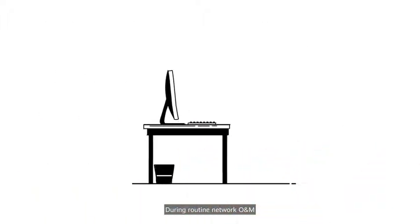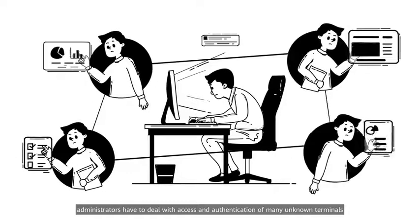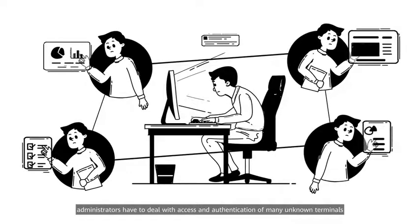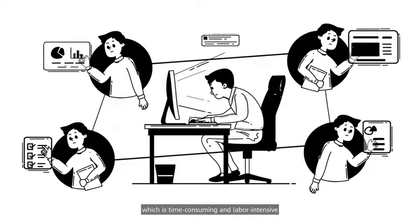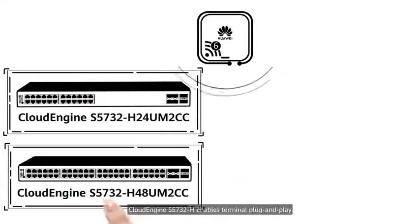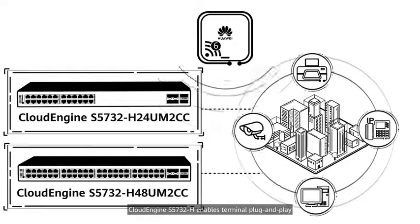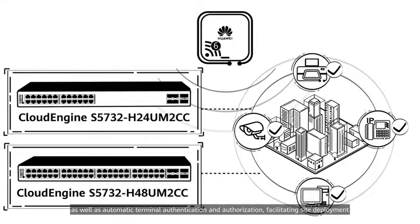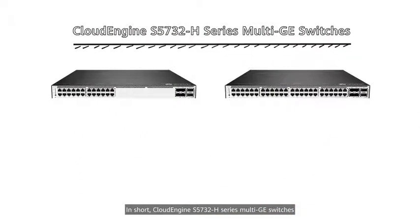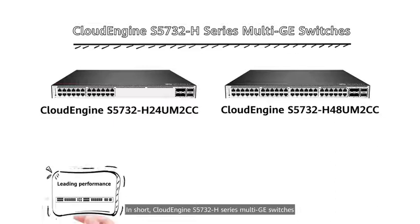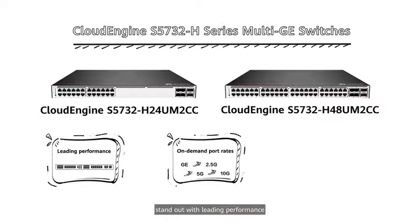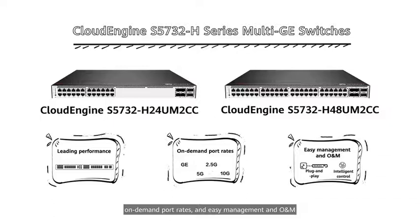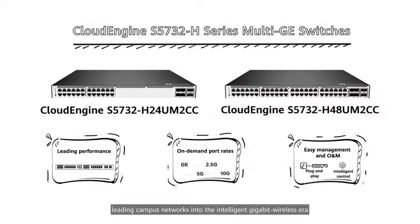During routine network O&M, administrators have to deal with access and authentication of many unknown terminals, which is time-consuming and labor-intensive. Cloud Engine S5732H enables terminal plug-and-play, as well as automatic terminal authentication and authorization, facilitating site deployment. In short, Cloud Engine S5732H series multi-GE switches stand out with leading performance, on-demand port rates, and easy management in O&M, leading campus networks into the intelligent gigabit wireless era.